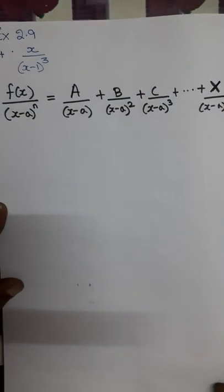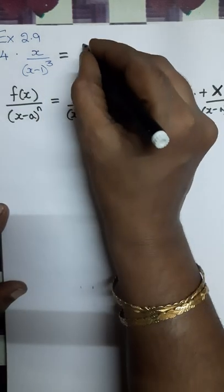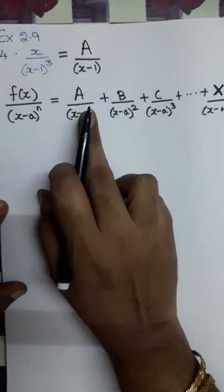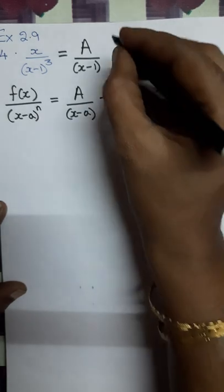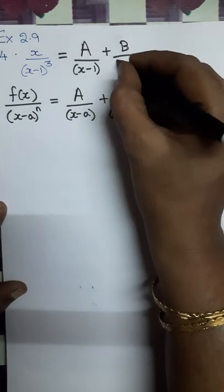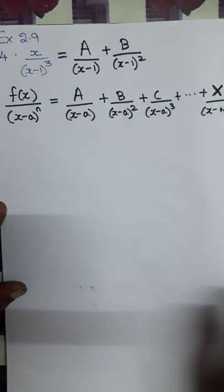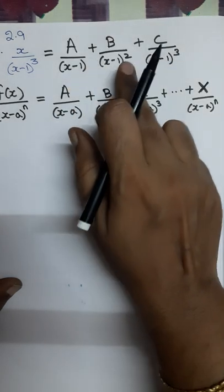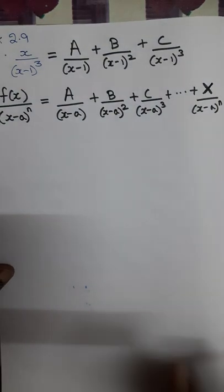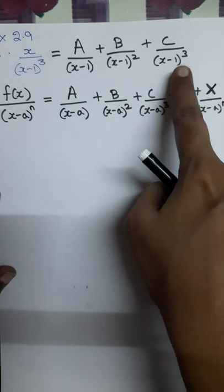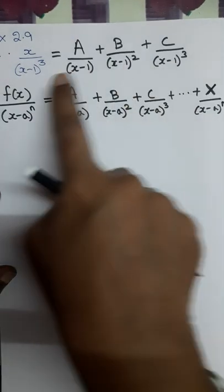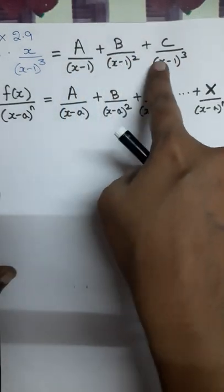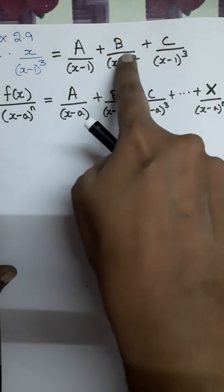In this particular question, the power is 3. So the first term is A by (x minus 1), with power 1. The second term is B by (x minus 1) whole square, with power 2. The third term is C by (x minus 1) whole cube. We keep increasing the power until we reach the power given in the question. Since the denominator is (x minus 1) cube, this question resolves into 3 fractions.